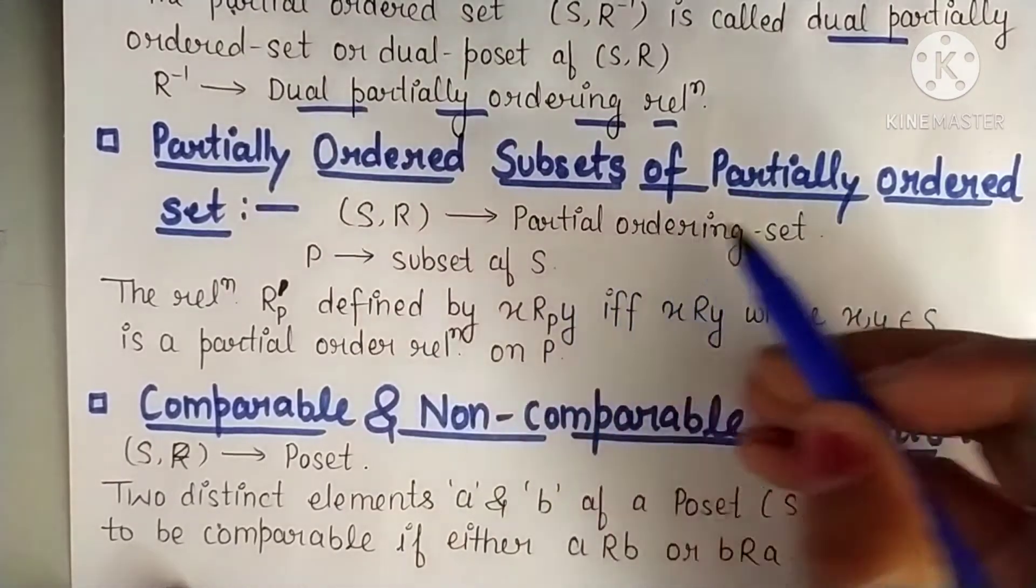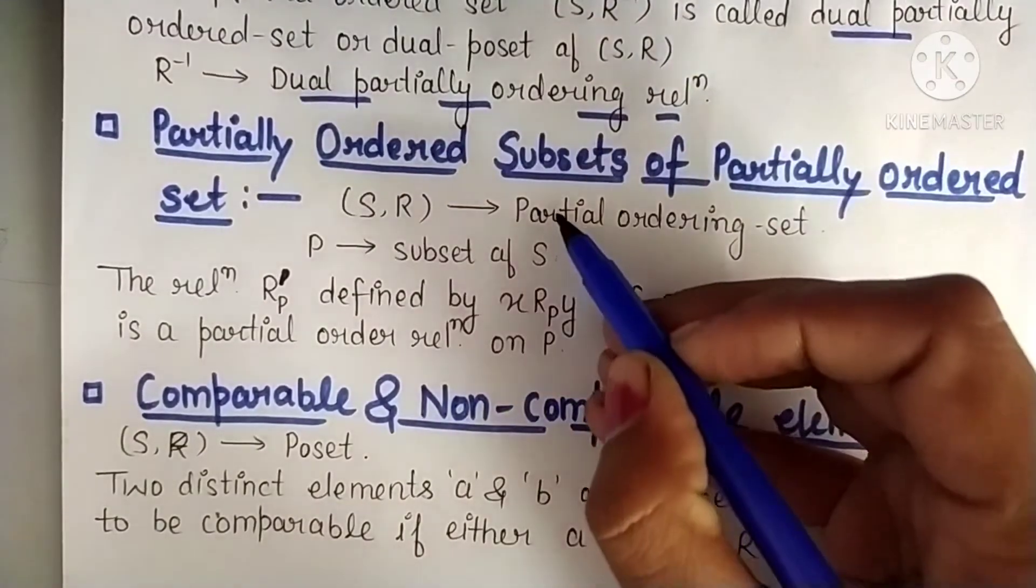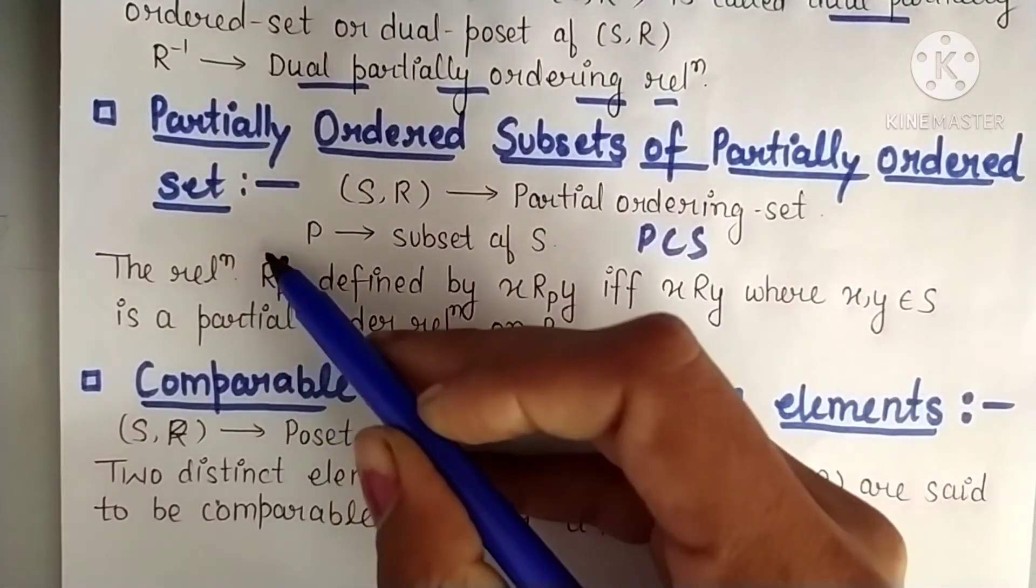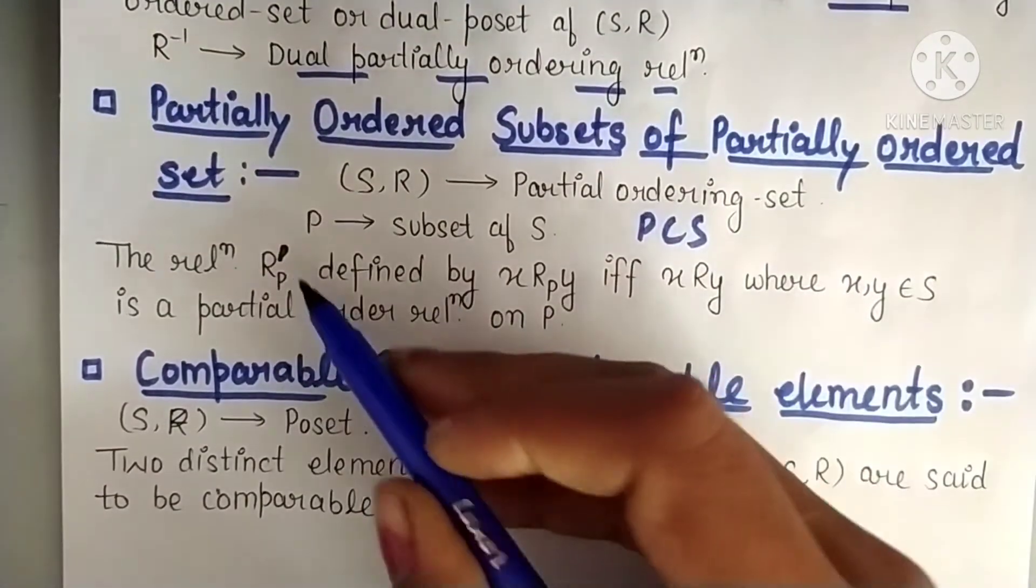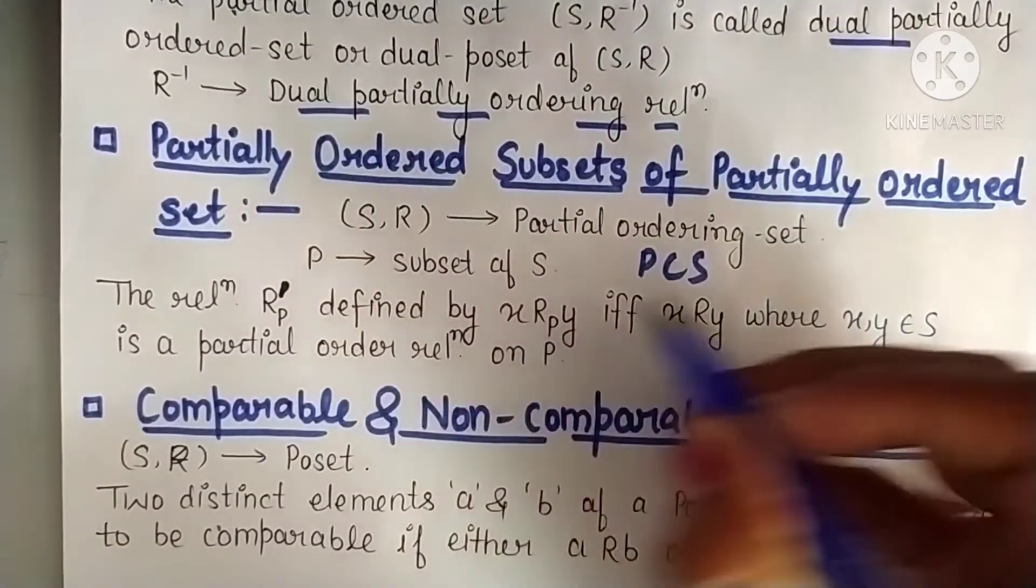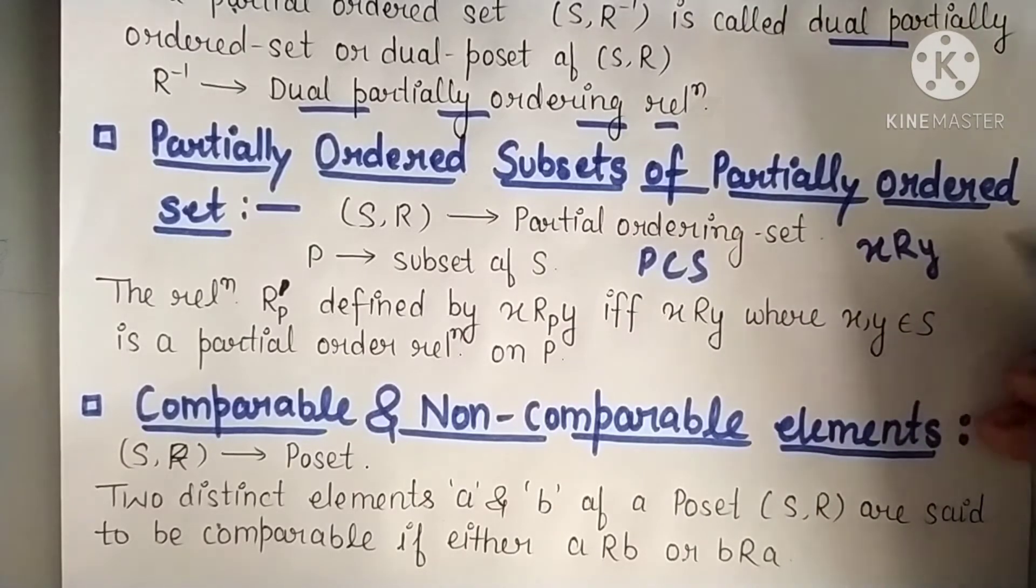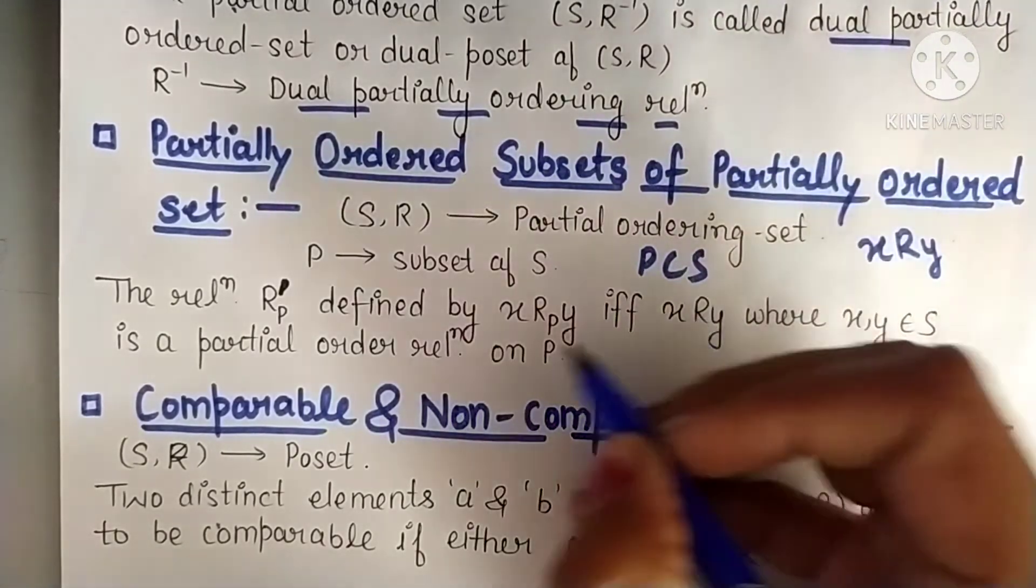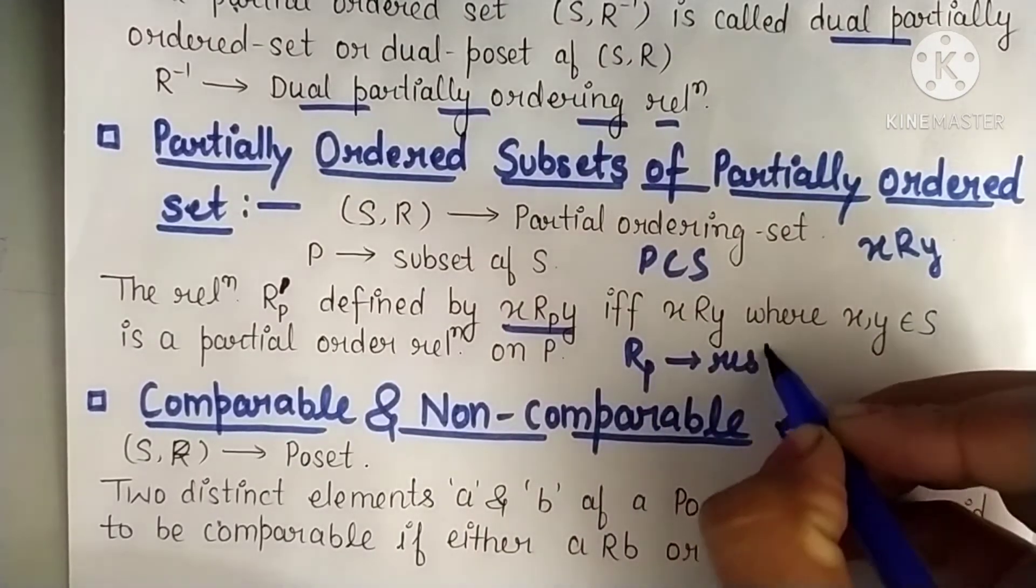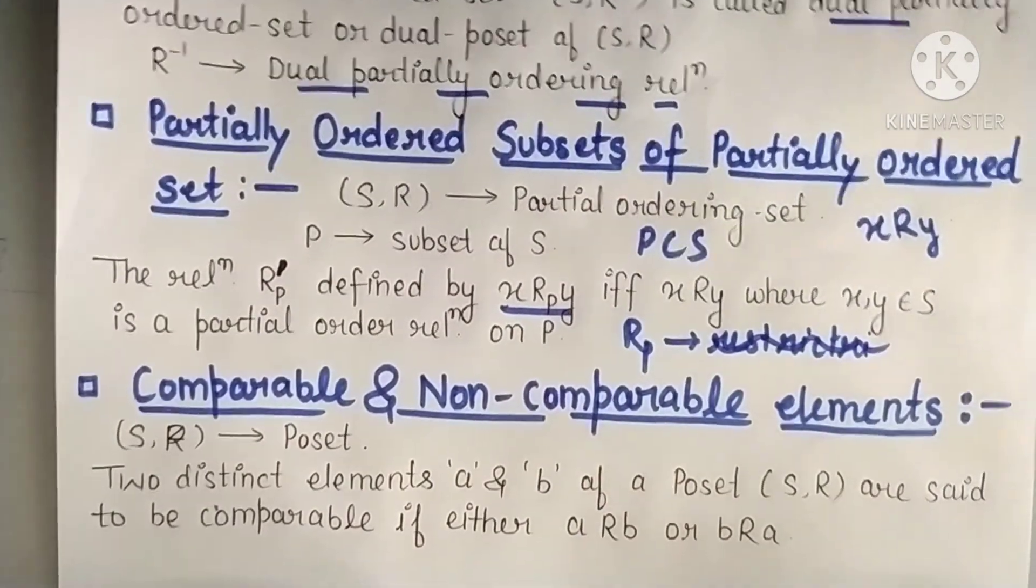Next definition is partially ordered subset of a partially ordered set. First we have to take a partially ordered set, and then we take some subset P of that set. So P is some subset of S. Then the relation R_P defined by - just like we defined R inverse, we will define R_P. What is R_P? When will we write R_P? If we have x related to y, where x and y both are from S, then we will write x R_P y. And what do we call (S,R_P)? Restriction, restriction of R over P.